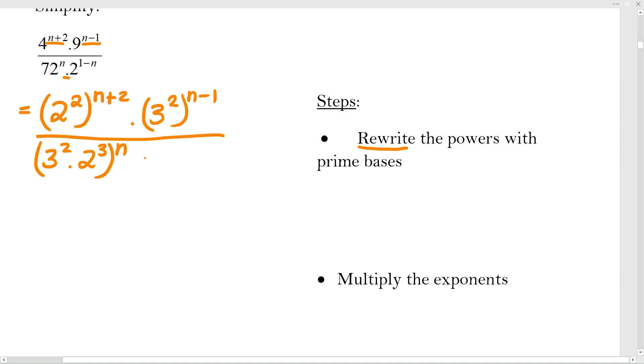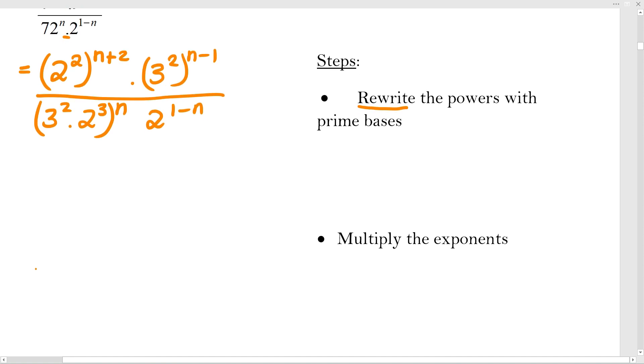At the bottom, we then move on to 2 to the 1 minus n, and that's already in prime base form. So there's nothing further to do. My next step is to multiply the exponents with each other. So it's going to be treated as 2 times each of those. You're seeing it like it is 2 times n plus 2, and you're treating it like you were doing basic distributive law in grade 9.